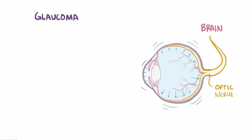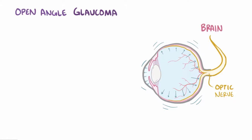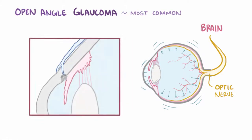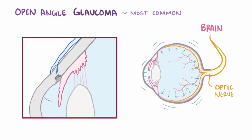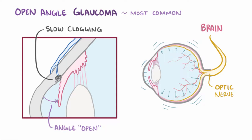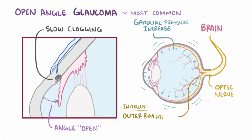There are a couple types of glaucoma. First there's open angle glaucoma, which is the most common, and it has this name because the angle between the cornea and the iris is open. In this type, the drainage system slowly gets clogged over time, so there's a gradual increase in pressure on the optic nerve. This initially results in atrophy of the outer rim of the nerve, resulting in a decrease in peripheral vision. As pressure increases even more, there's continued damage to the optic nerve, which eventually leads to a loss in central vision as well.